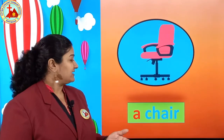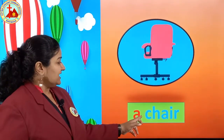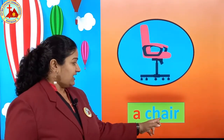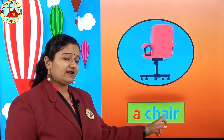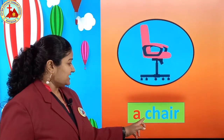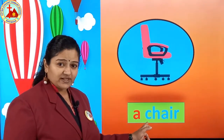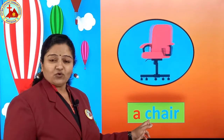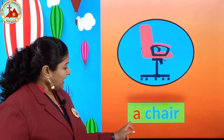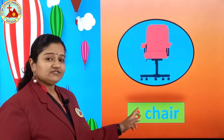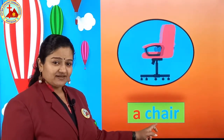Next one is chair. Chair spelling starts with C — C, H, A, I, R, chair. First letter is C. C is not a vowel. Then we put A: a chair.